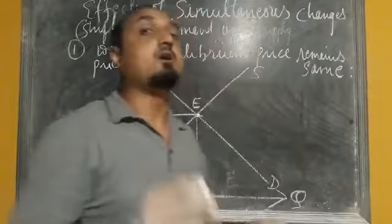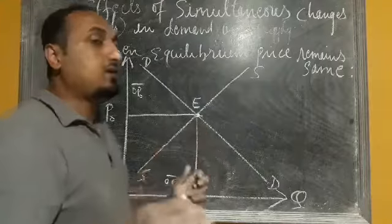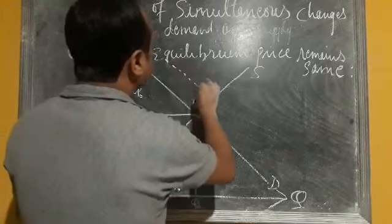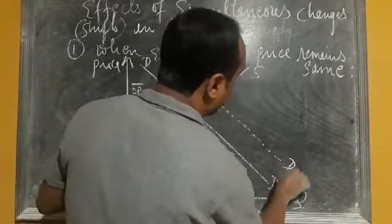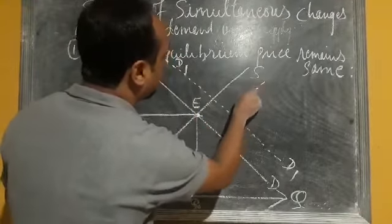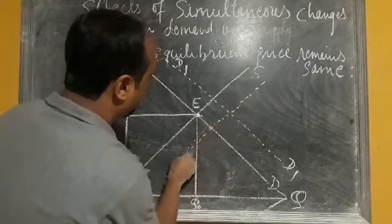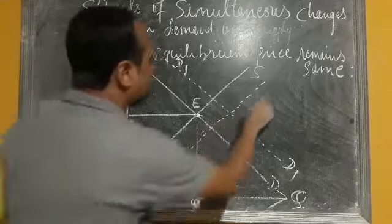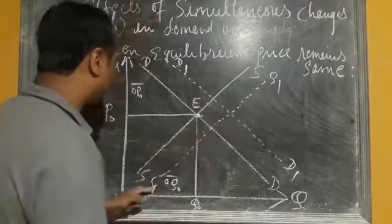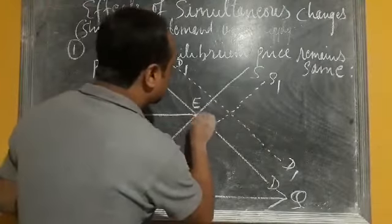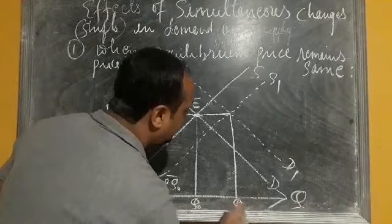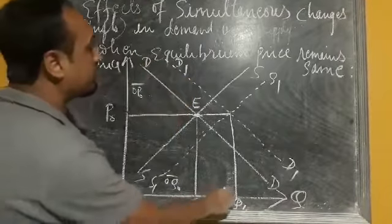What will happen if demand and supply change simultaneously by the same proportion? Suppose demand is changing by 10% and supply is also changing by 10%. The new demand curve is D1D1 and the new supply curve is S1S1. At the same price OP0, the quantity demanded is increasing from OQ0 to OQ1.